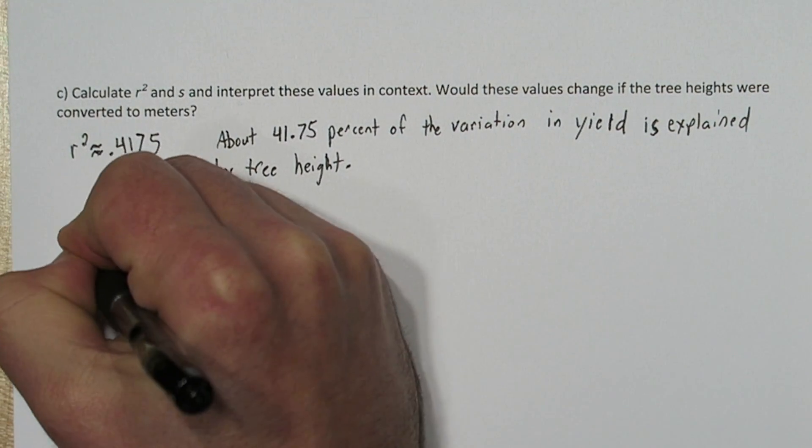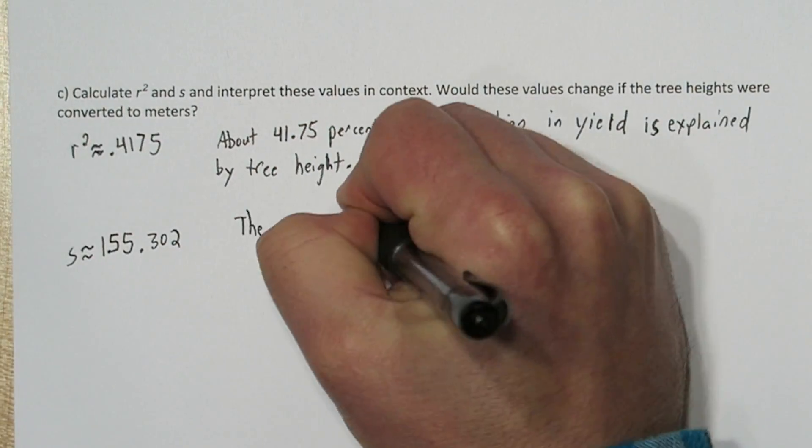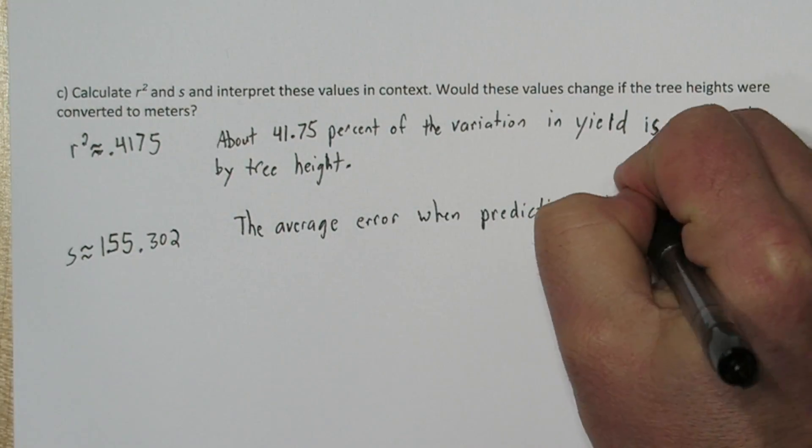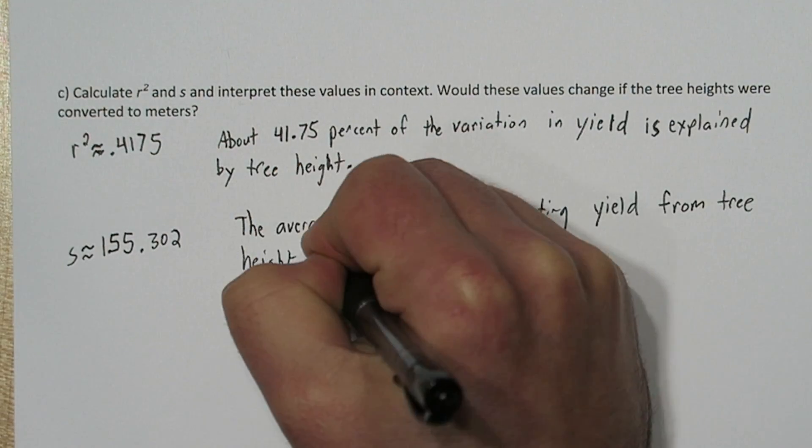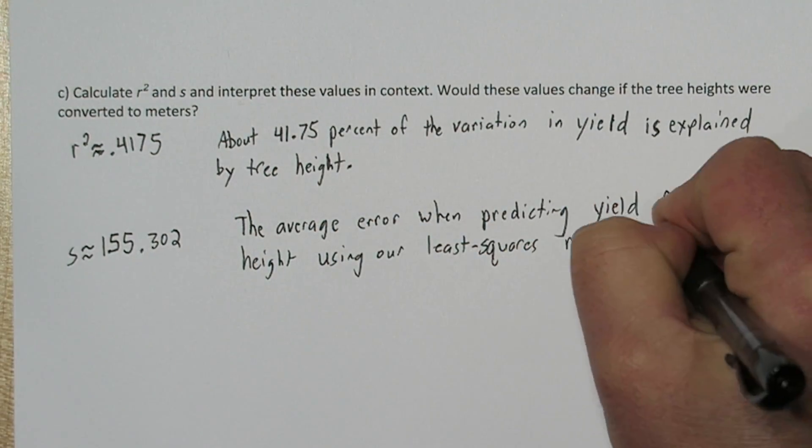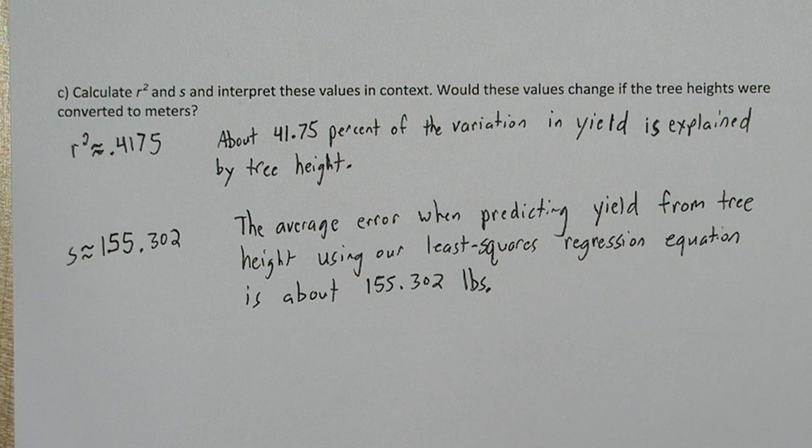Now S is actually a standard deviation of the residuals. And to interpret it, we'll say the average error when predicting yield from tree height, using our least squares regression equation, is about 155.302 pounds.